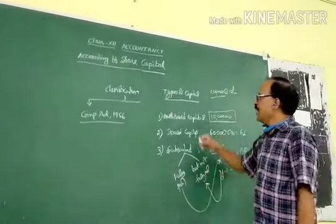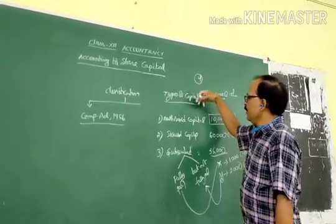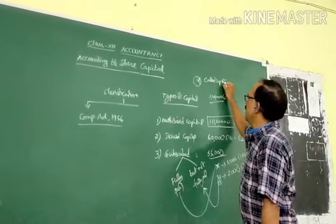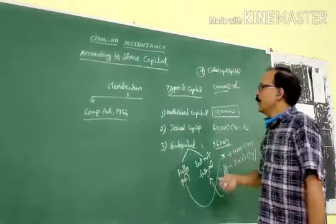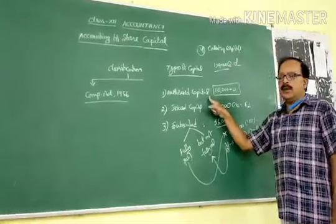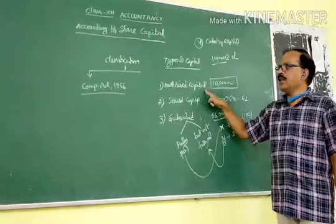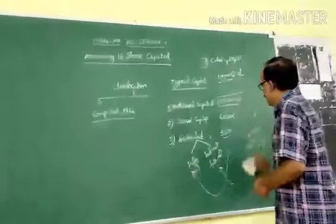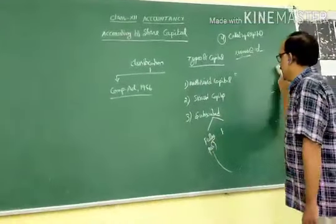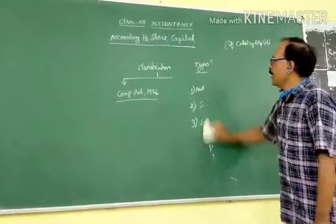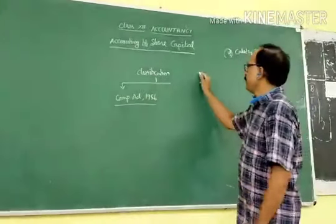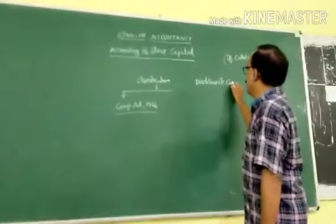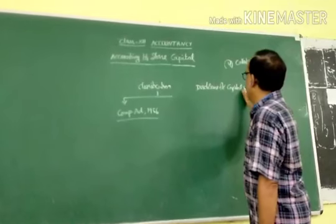One more classification is called capital, which is not that important in the balance sheet. So these are the different types of capital: authorized capital, issued capital, and subscribed capital. In the balance sheet, one has to show authorized capital, issued capital, and subscribed capital — this is the disclosure of capital in the balance sheet.